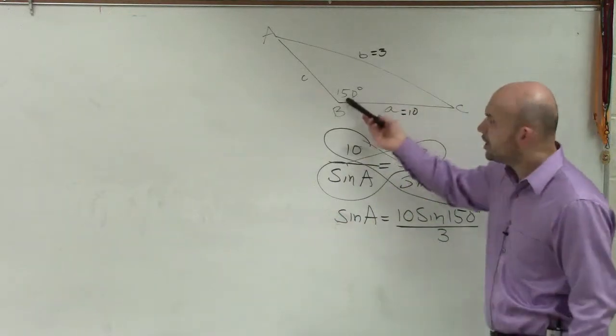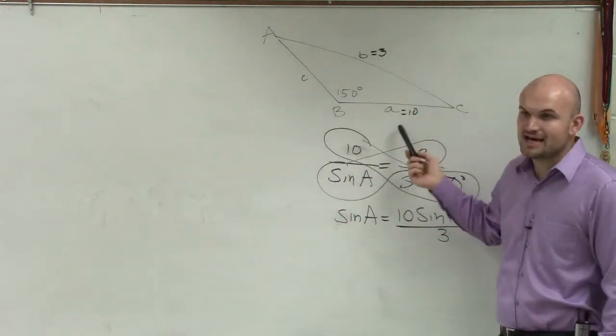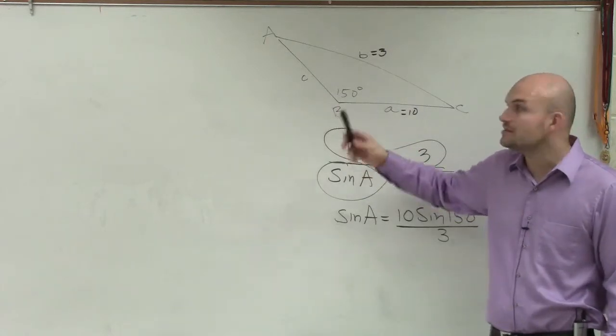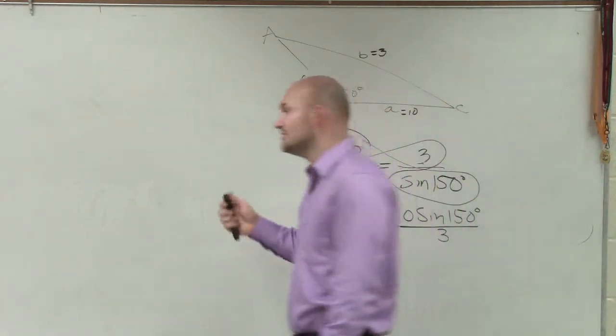Look at this triangle, 150 to 3. If this side length is 10, that angle has to be bigger than 150, right? So therefore, no triangle exists.